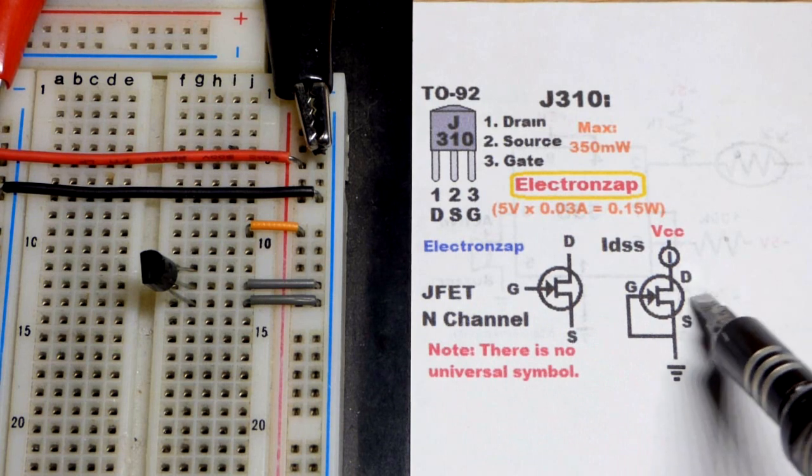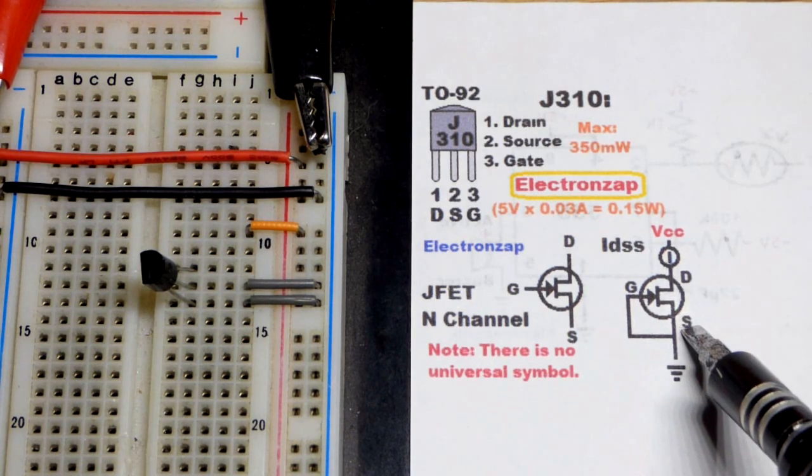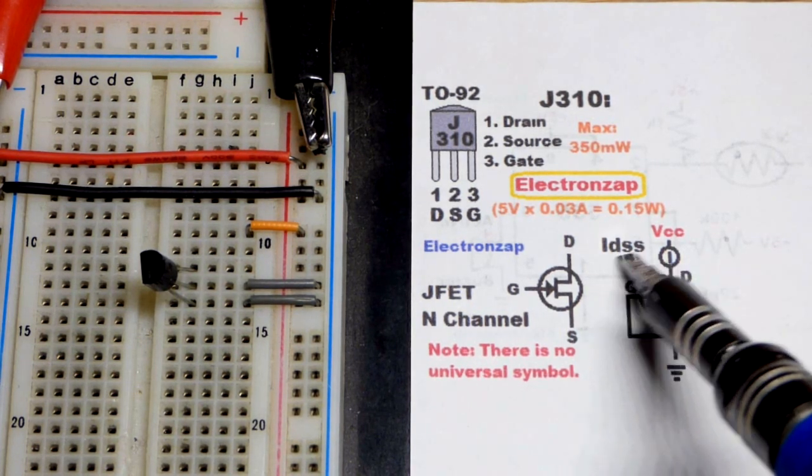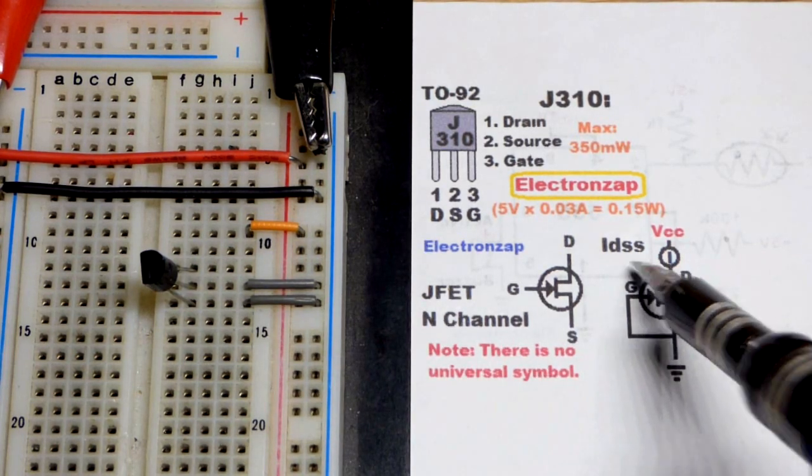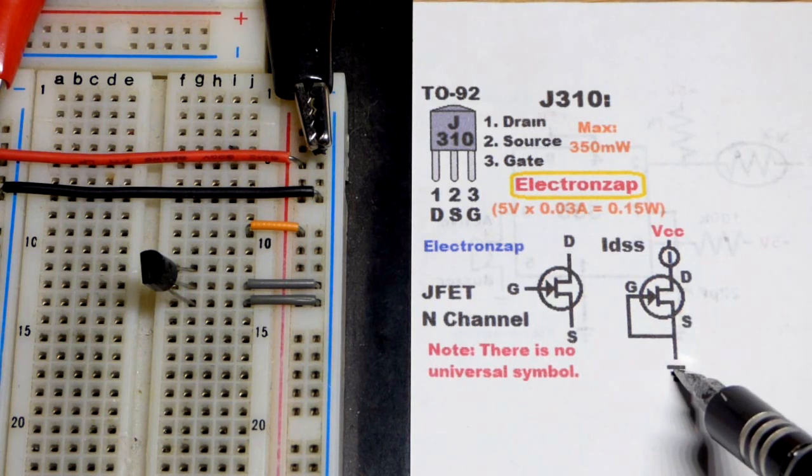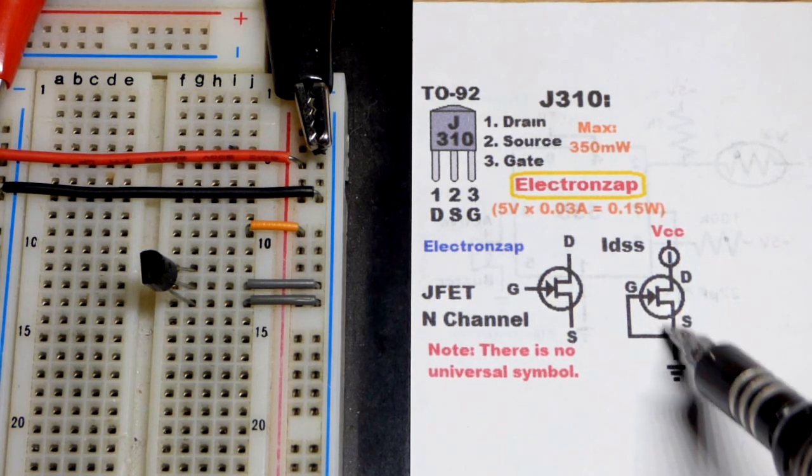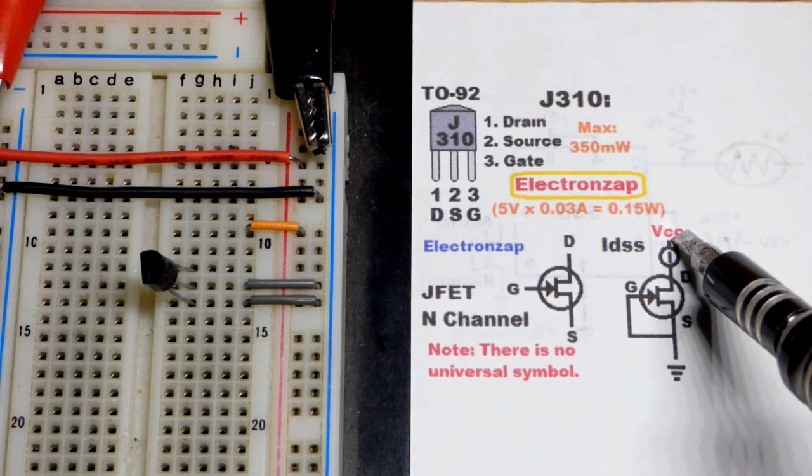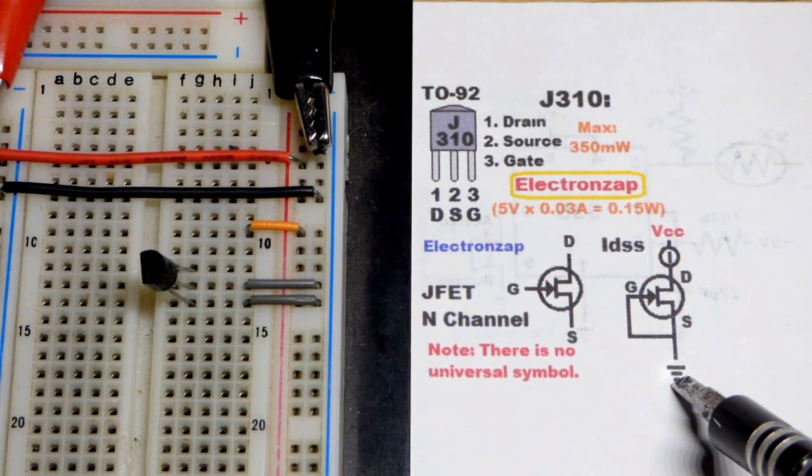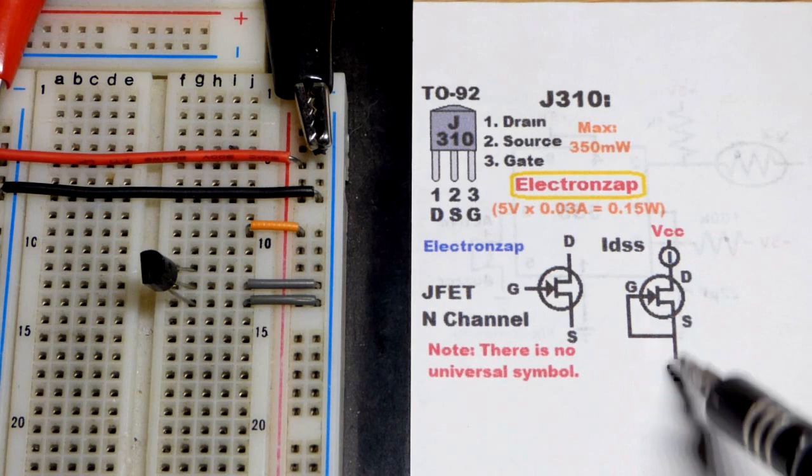They have a property where they can set current pretty well. We're going to look at the IDSS of this J310 right there. When you have the gate and the source tied together, source to ground or gate to ground, they're tied together, doesn't matter. Then when you apply a voltage, you'll have a certain amount of current that flows through. That's the maximum current that will go through this transistor.